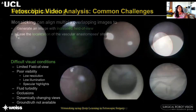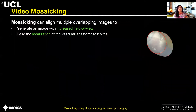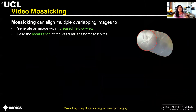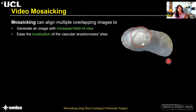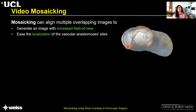Moving on to mosaicing or video mosaicing: mosaicing basically spatially aligns multiple overlapping images to generate an image with an increased field of view. This can help the clinician during the TTTS photocoagulation procedure for better identifying the anastomosis sites.